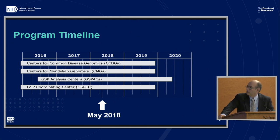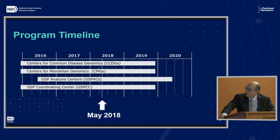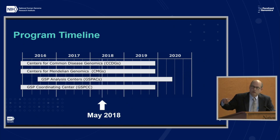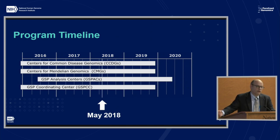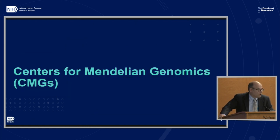Program timeline: the current iteration of the program was started in 2016. It ends at the end of 2019 roughly — you can see where we are here in May. Most of what we'll talk about today for the Centers for Common Disease Genomics, GSP Analysis Centers, and GSP Coordinating Center — these either changed their mission or were completely new two years ago. The Centers for Mendelian Genomics are in their second round with roughly the same mission, covering six years. I'll leave it here for Chris.